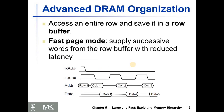Modern DRAMs usually have a row buffer. An entire row is accessed and stored in this row buffer. For example, the fast page mode can supply successive words from this row buffer with reduced latency.